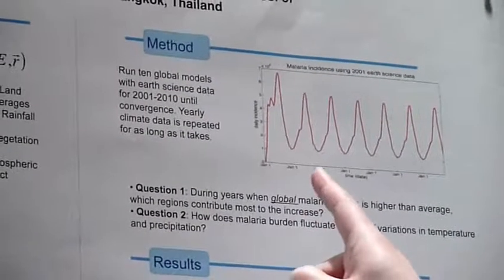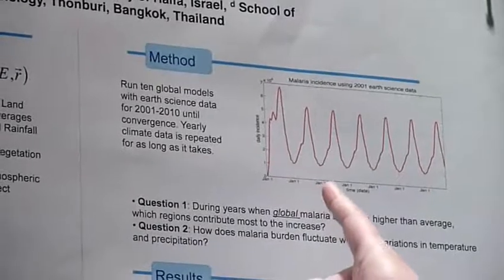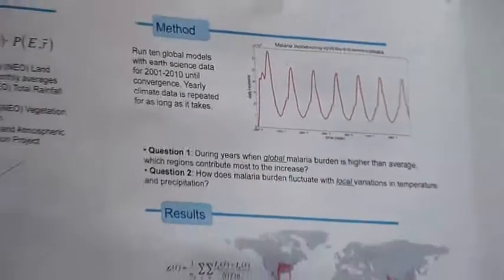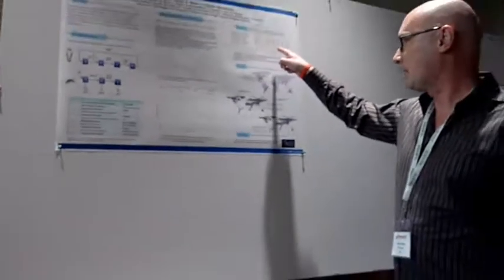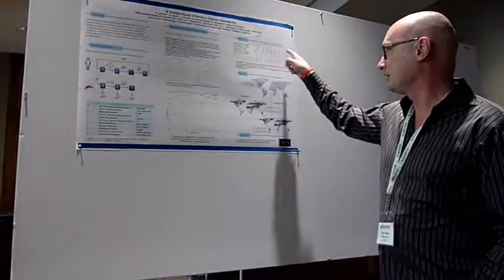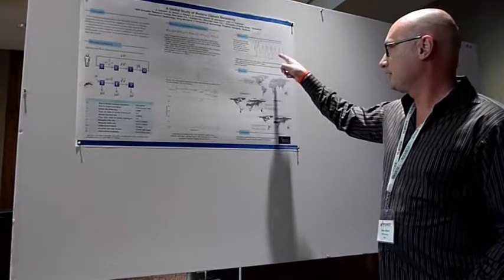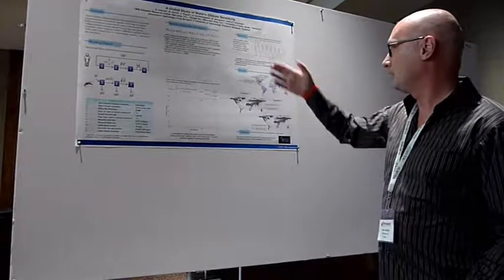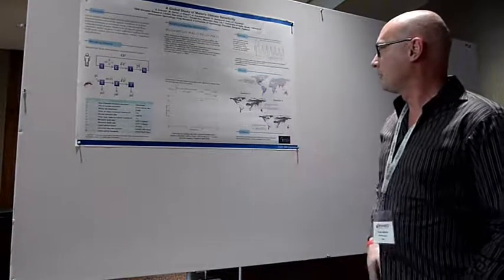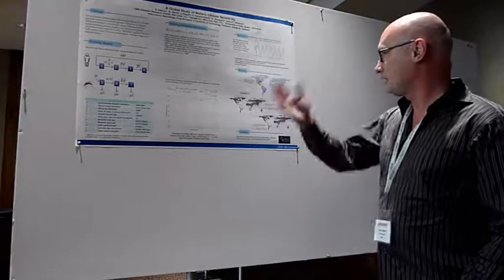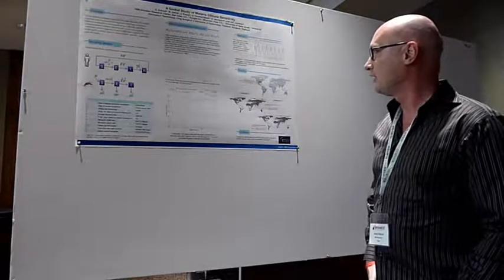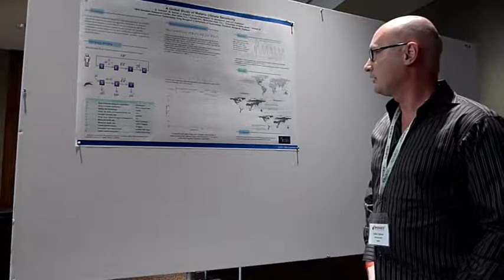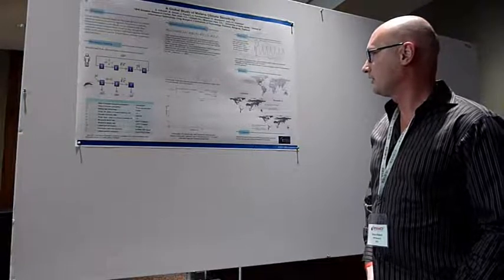We take one year, say 2001, and run a global patch model for as long as it takes until convergence — in this case about five years. We extract the last year of incidence from the data, and we do that ten times for each year from 2001 to 2010. So now we have ten climate datasets with associated incidence.